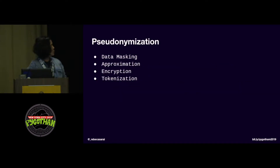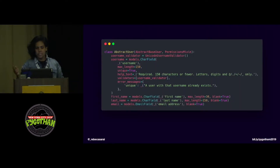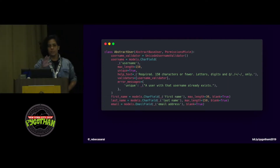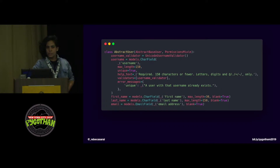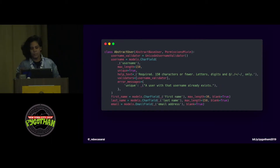You have a few techniques to do pseudonymization: data masking, approximation, encryption, and tokenization. We use these on our day-to-day and might not even notice. One example is when you have a Django project and build models to store attributes of your entities — username, first name, last name, and email. But you don't use this personal information directly in your system. When you want to build relationships with other models, you just link them with a unique identifier. That right there is a type of pseudonymization, because you link models with abstractions.